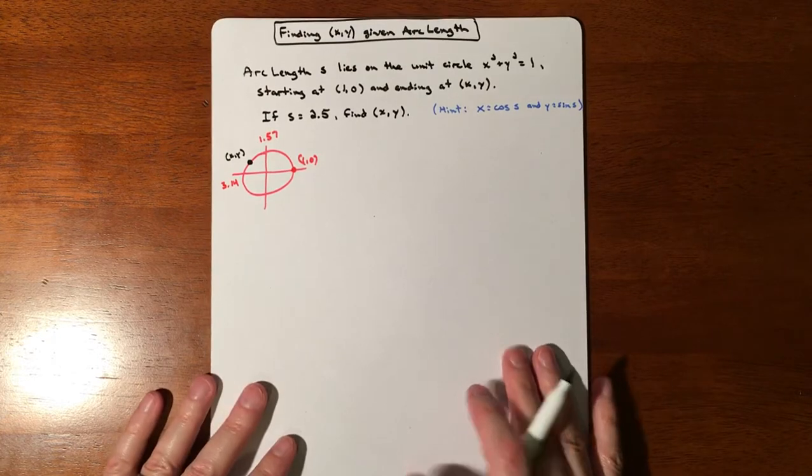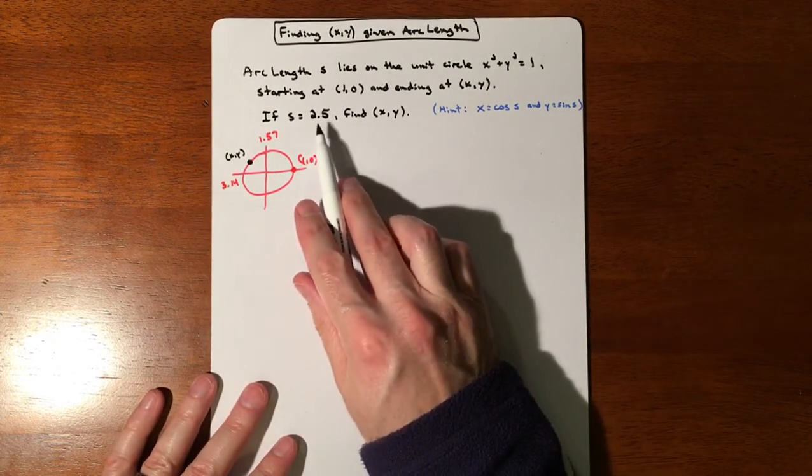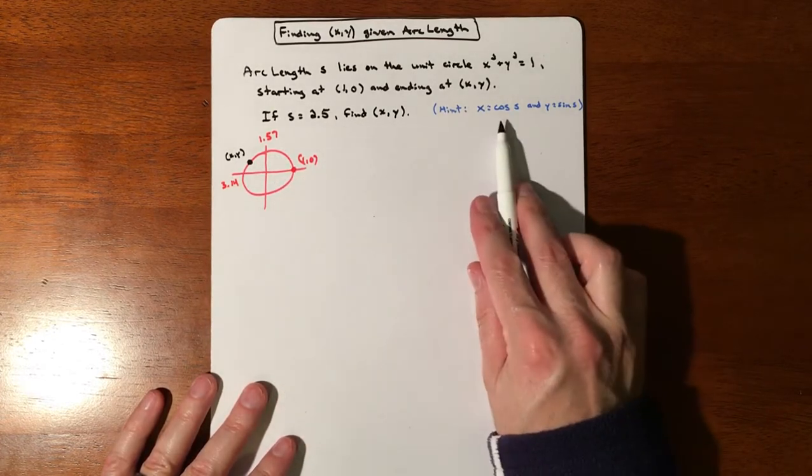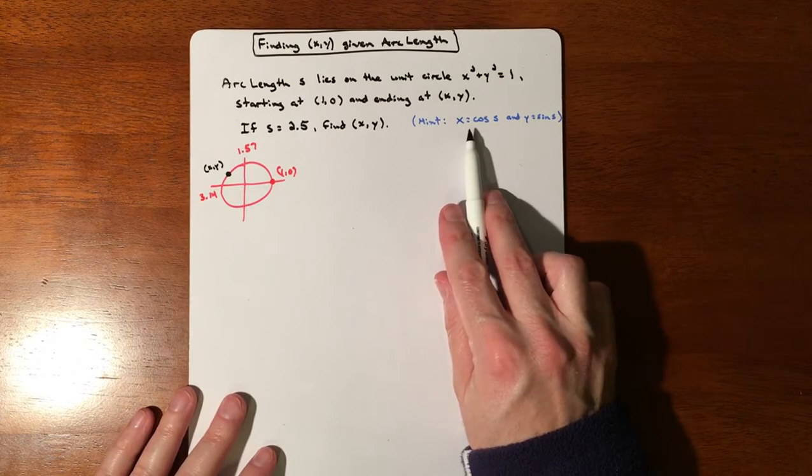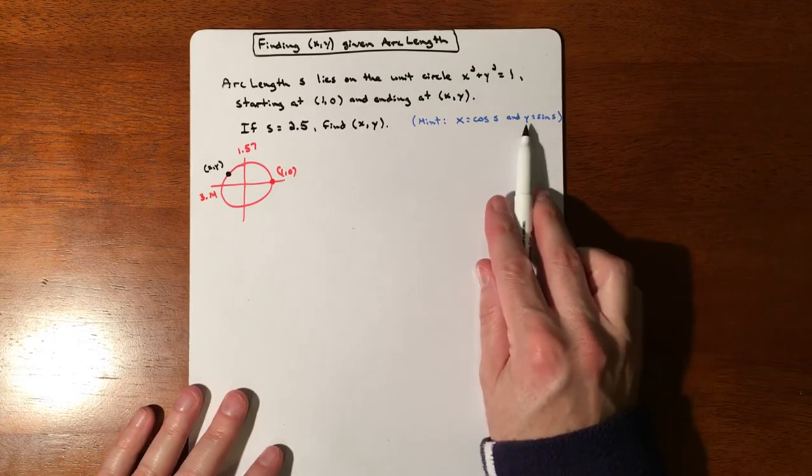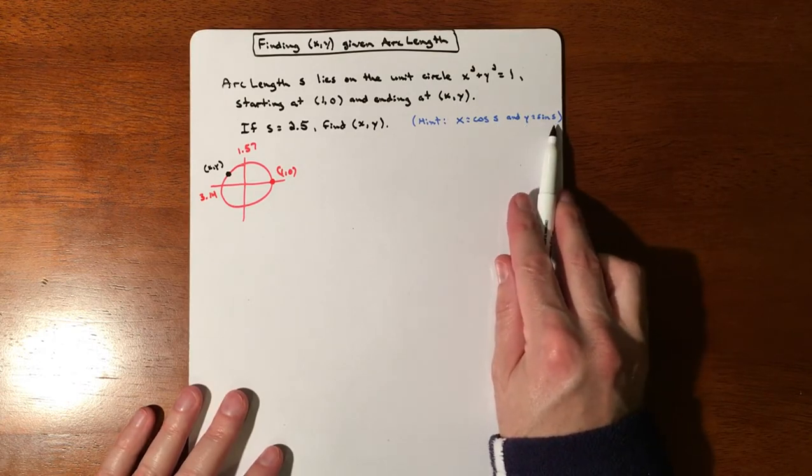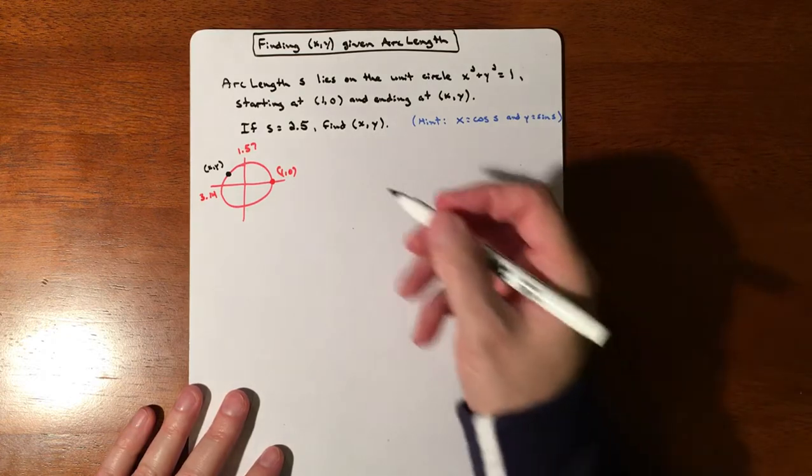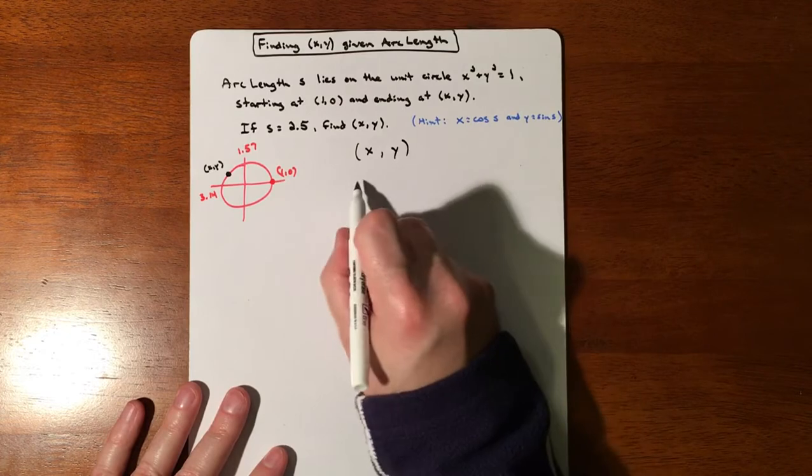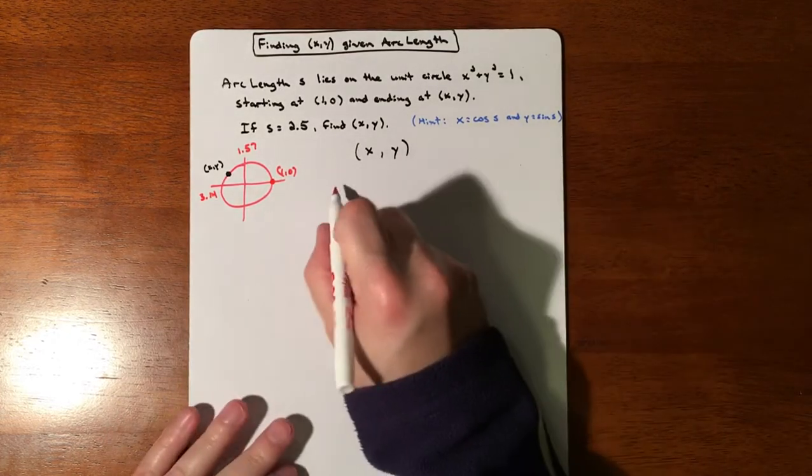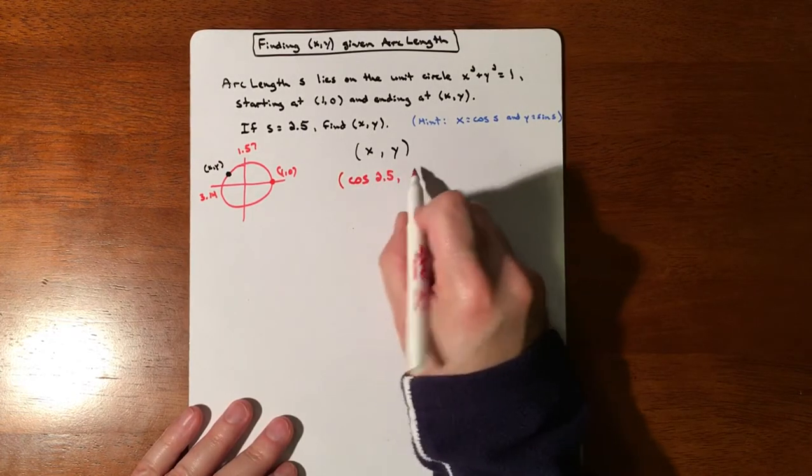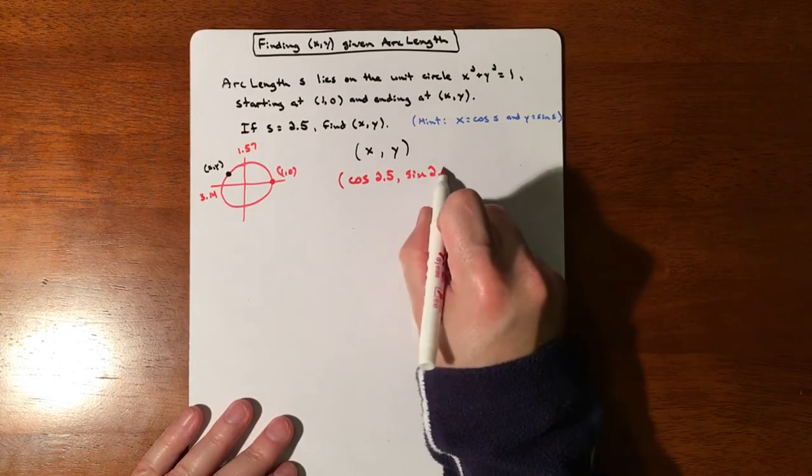So, basically, the hint is really the biggest part to this. It's that your arc length, because it's on a unit circle, is really just the radian measurement. And so your x value is just going to be equal to cosine of whatever angle you have, aka radian. And your y value is just sine of whatever your angle is. So then all that means is that your coordinate of x, y comes cosine 2.5 and sine 2.5.